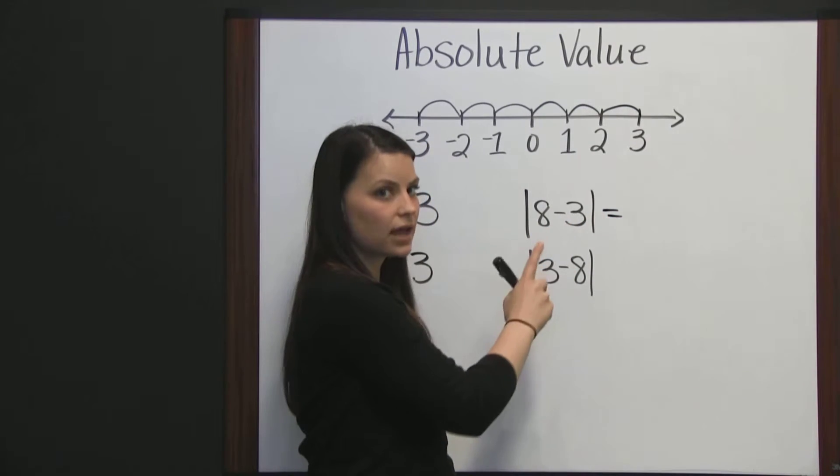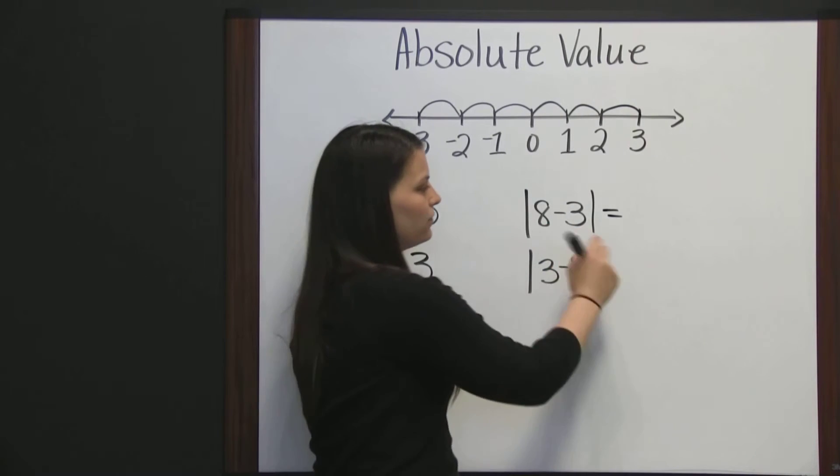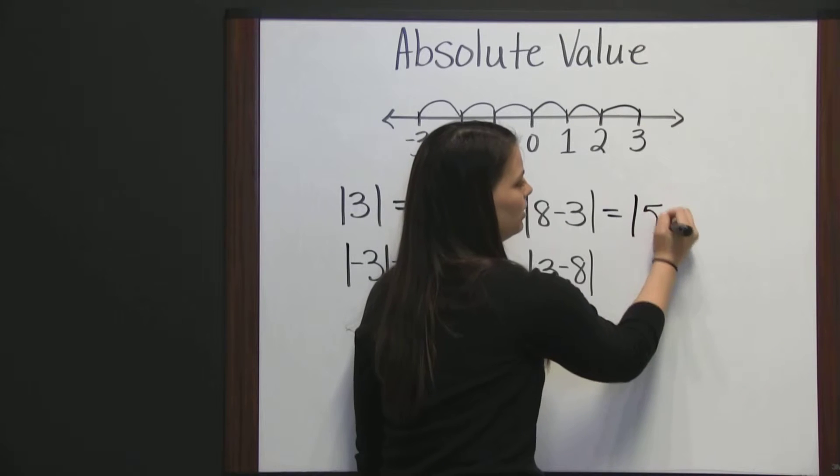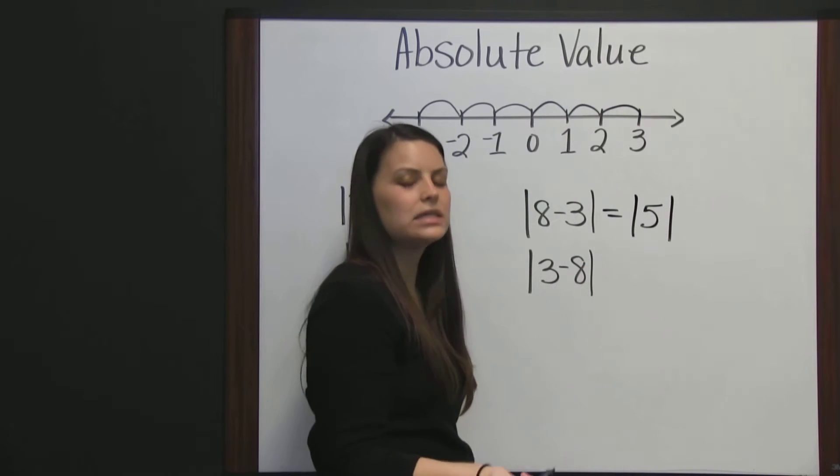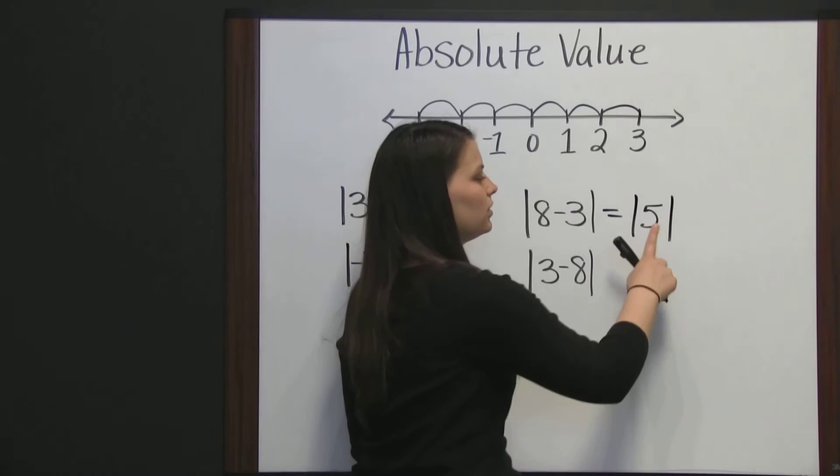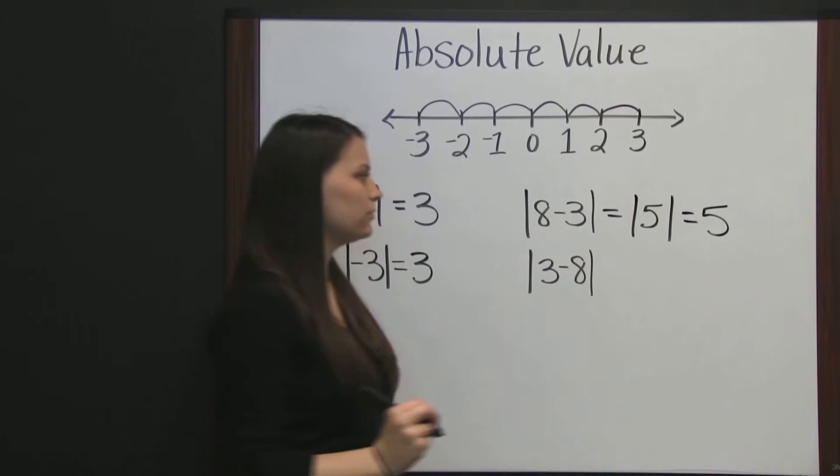Start on the inside finding your difference. Eight minus three is five. So, we have the absolute value of five, and again, absolute value is the distance from zero. Five is five places from zero.